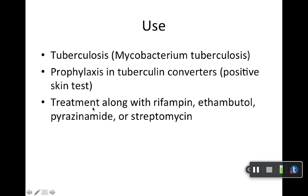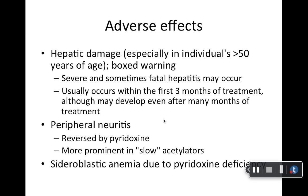Resistance is a problem as mentioned. Isoniazid is one of the four that the CDC recommends for tuberculosis. It's used in combination — that four-drug combination the CDC recommends. Streptomycin used to be considered first line in older textbooks, but it's no longer — it's just those four now as listed on the CDC website.